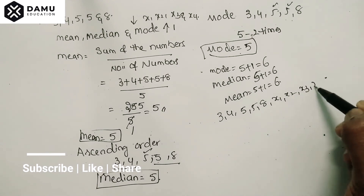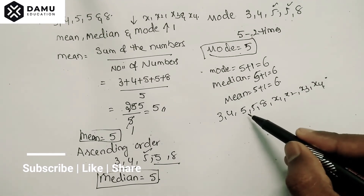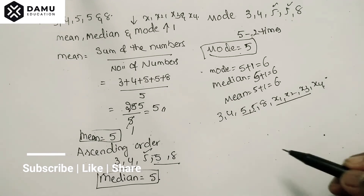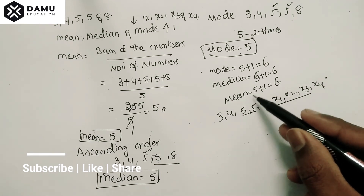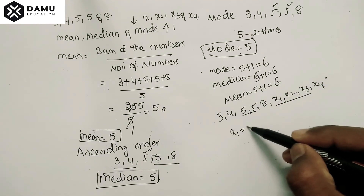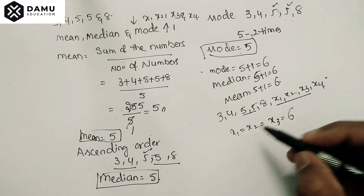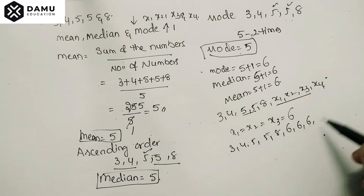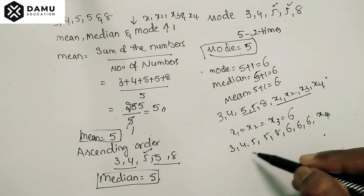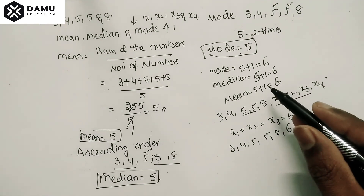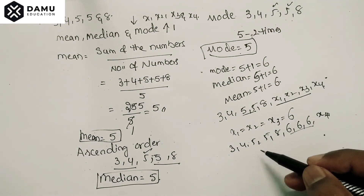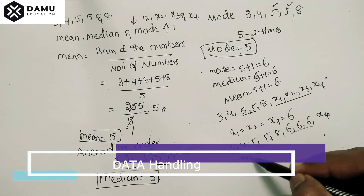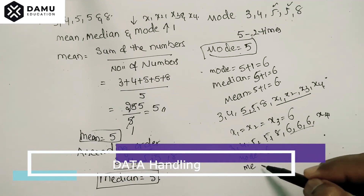The current set is three, four, five, five, eight, x1, x2, x3, x4. Five already appears two times. For mode to become six, six must appear more times than five. So three of the new numbers must equal six: x1 equals six, x2 equals six, x3 equals six. That gives us three sixes versus two fives, making mode equal to six.